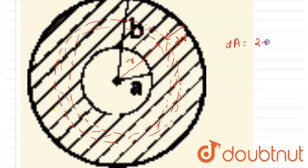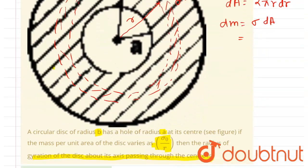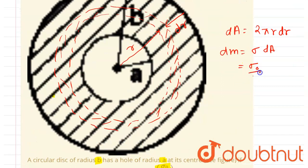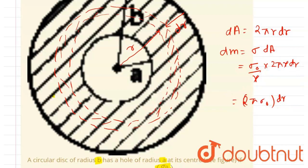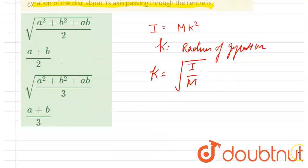The area of the ring is 2πr·dr. Mass equals mass per unit area times area, so dm = (sigma₀ / r) × 2πr·dr. The r terms cancel out, giving dm = 2π·sigma₀·dr.